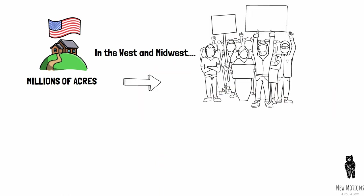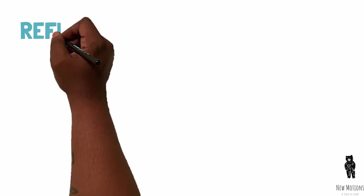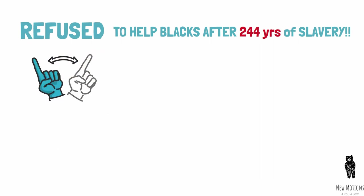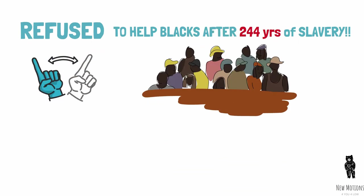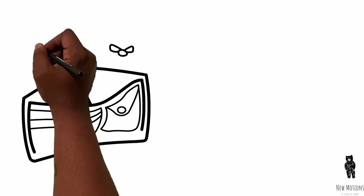And yet it refused to give its black peasants from Africa who came here involuntarily in chains and had worked free for 244 years any kind of economic base. And so emancipation for the Negro was really freedom to hunger.